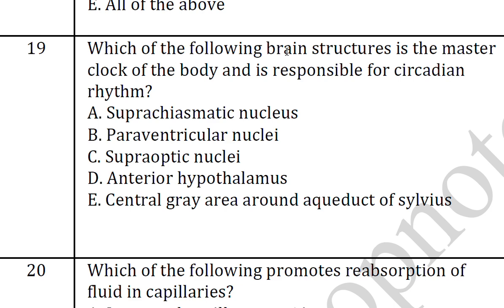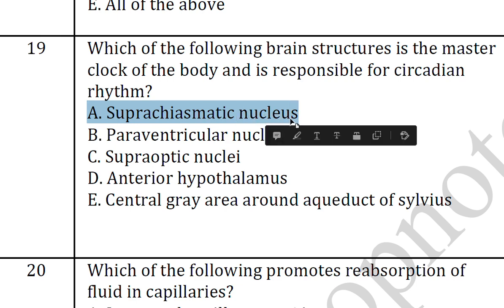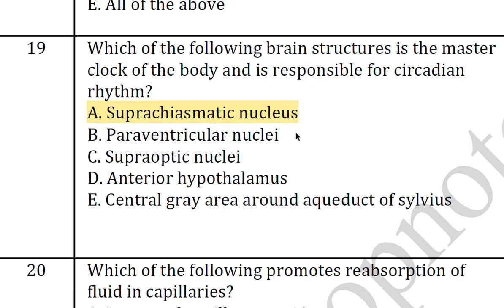The nineteenth question: which of the following brain structures is the master clock of the body and is responsible for circadian rhythm? The answer is A, the suprachiasmatic nucleus, which is responsible for circadian rhythm and is also known as the master clock of the body.